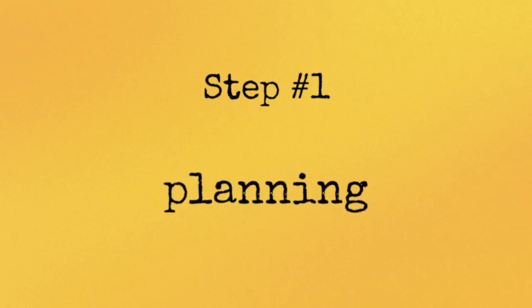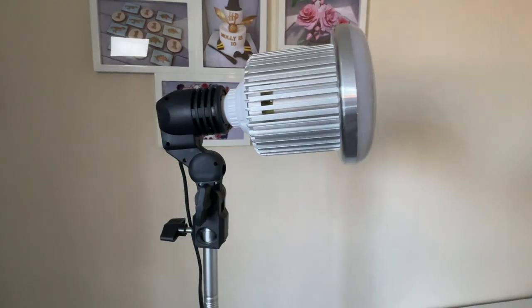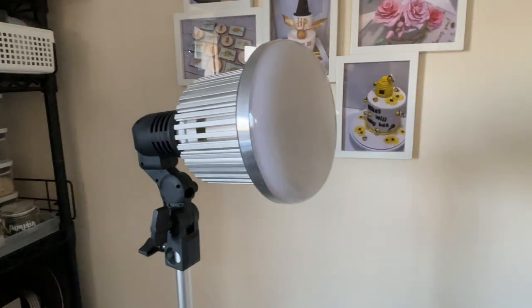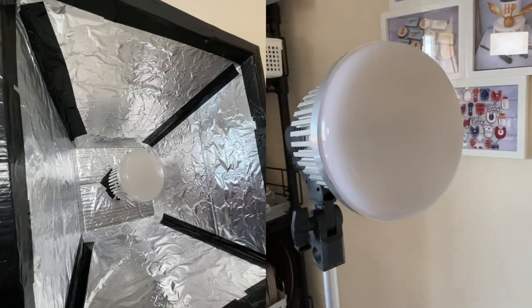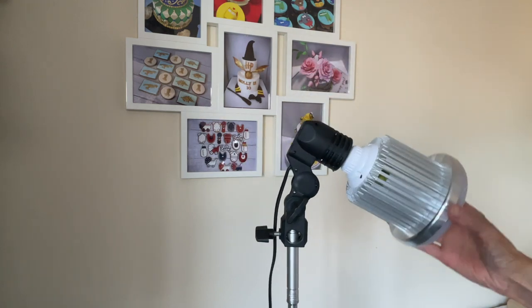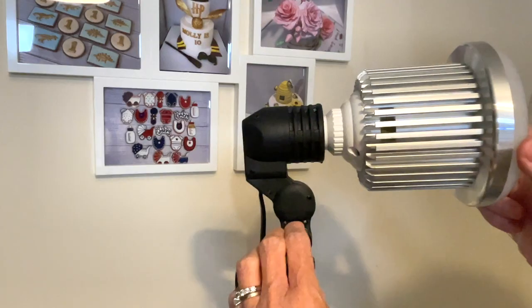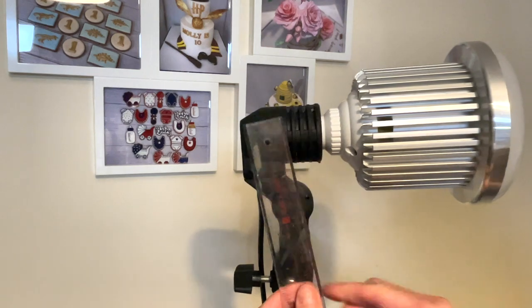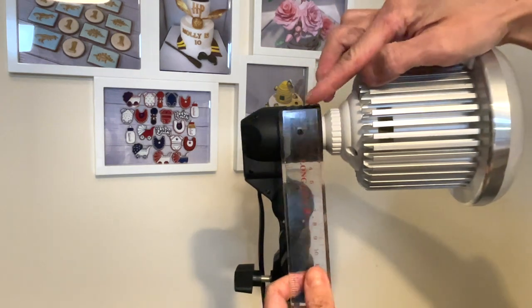Step number one: planning. This is a very important step because it determines how big your softbox will be. We need to work around the limitation of the light, just like mine. If it is too big, it can't tilt down to my desired angle. On the other hand, if it is too small, the softbox ends up not big enough to achieve the effects that I want.